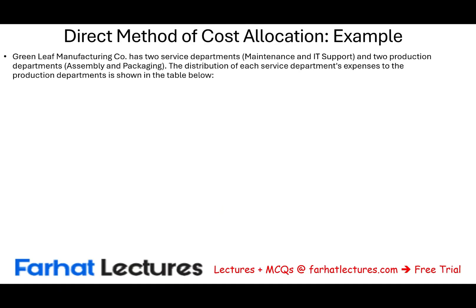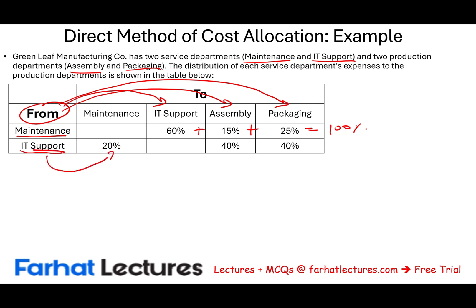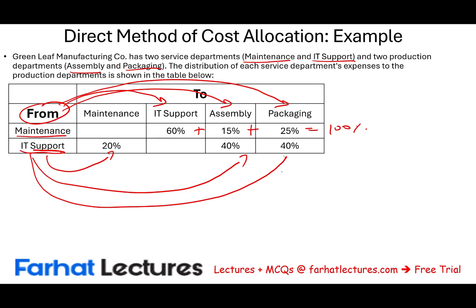Greenleaf Manufacturing has two service departments — maintenance and IT — and two production departments — assembly and packaging. The distribution of each service department's expenses: from maintenance, 60% to IT support, 15% to assembly, 25% to packaging — totaling 100%. From IT, 20% to maintenance, 40% to assembly, 40% to packaging — totaling 100%.